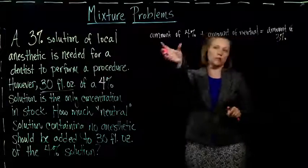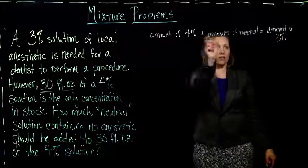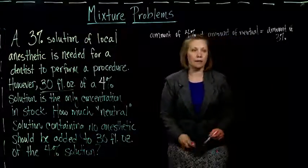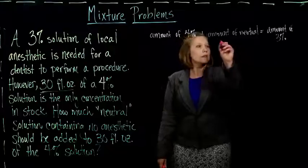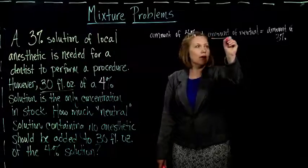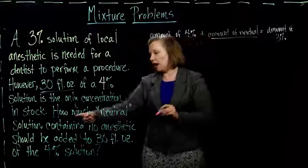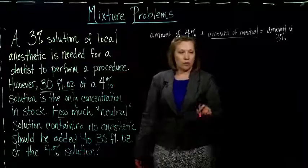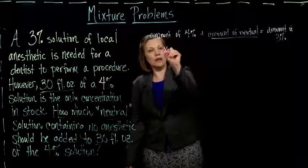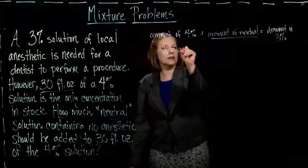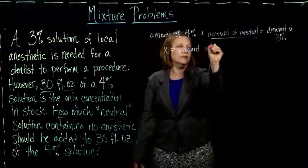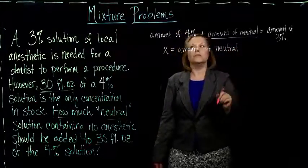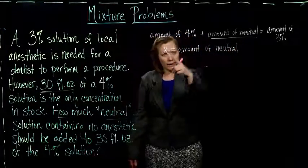So if I take our 30 fluid ounces, add it to some amount that I'm going to figure out, I should get how much 3% solution I have. So I need to figure out what my variable is here. They ask me to find how much neutral solution do we need. So I'm going to let that be my x. So let x be the amount of neutral solution.